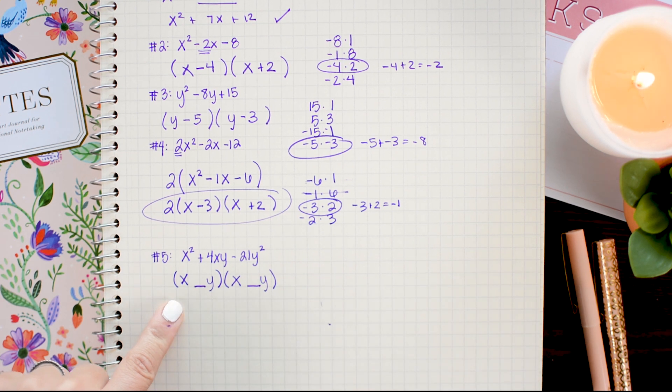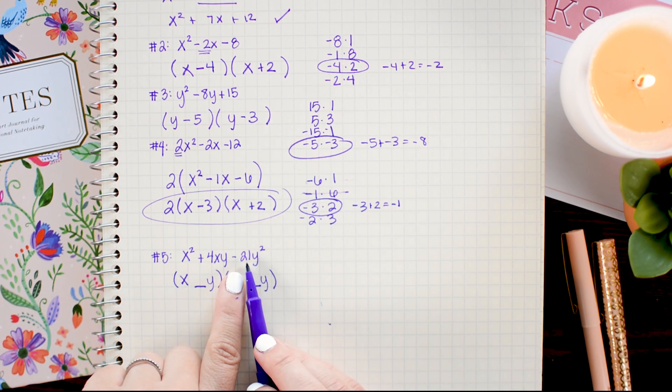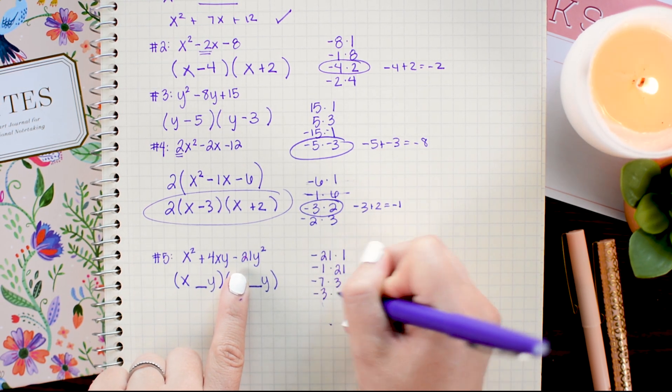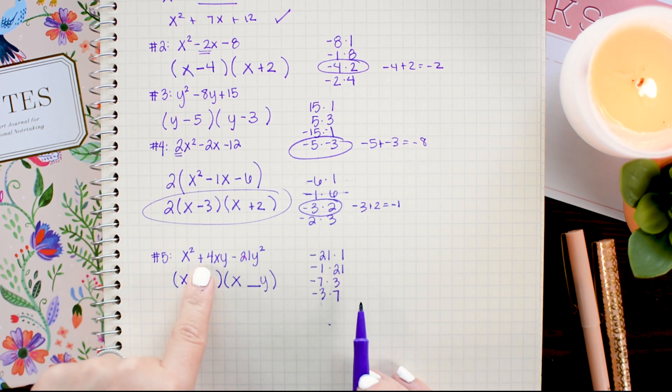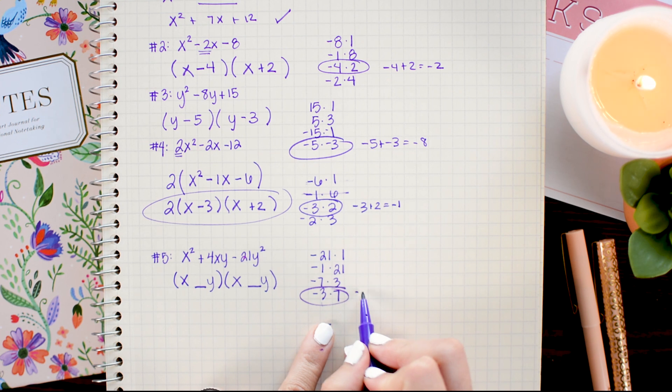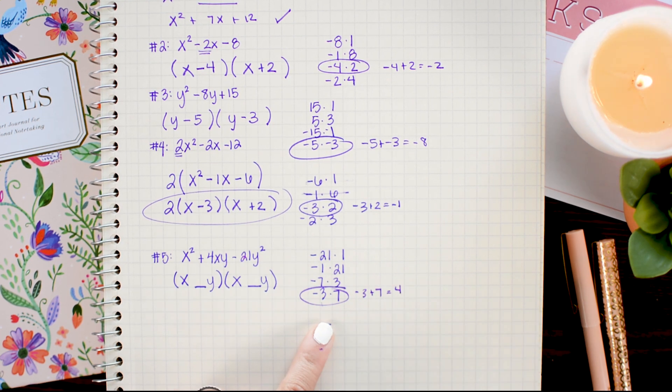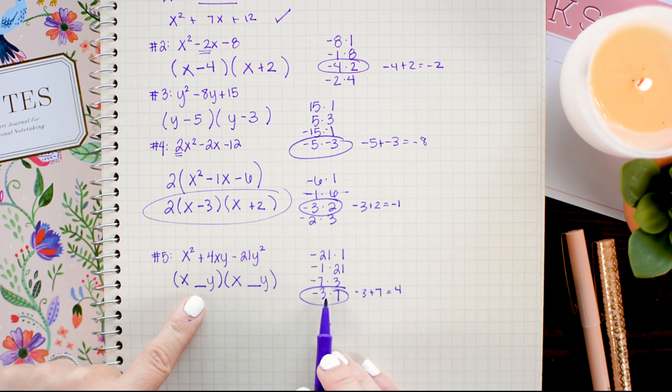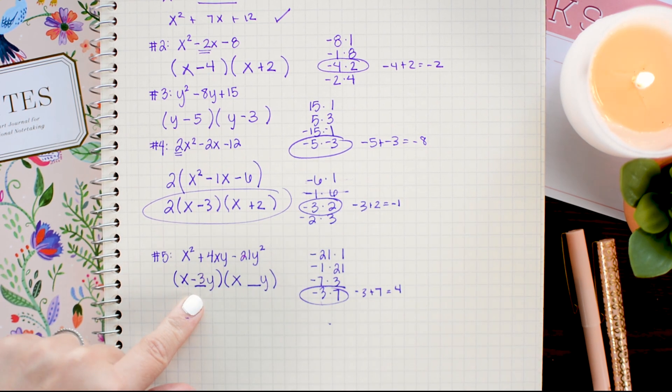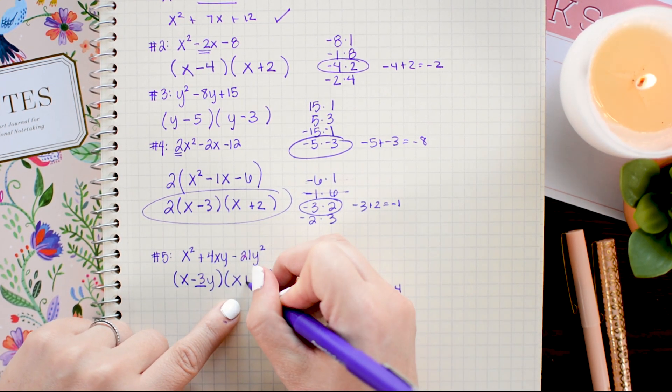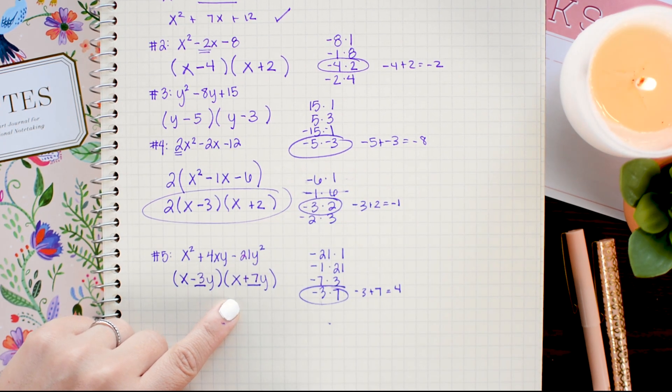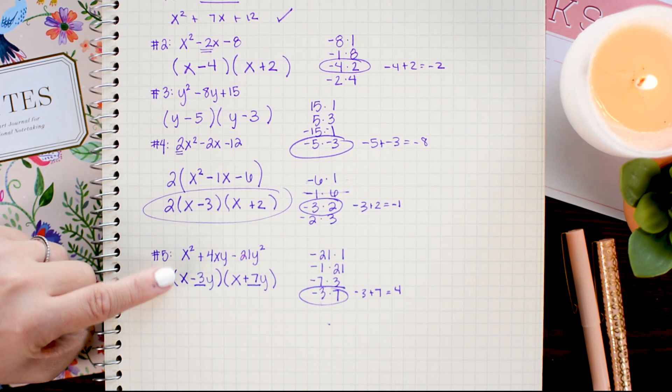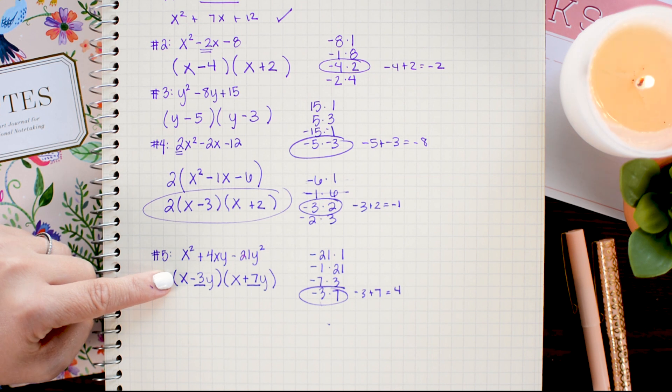So now I'm going to be filling in the coefficient on y. Like our previous problems, I'm going to write down the factors of negative 21. Next, look through them to see which makes a positive 4. And it is this final one, because negative 3 plus 7 equals 4. Now all I need to do is go ahead and append these two numbers to my y's. So I have negative 3y, so minus 3y on this one, and a positive 7. So I'm going to put plus 7y. So that means that the factorization of x squared plus 4xy minus 21y squared is x minus 3y times x plus 7y.